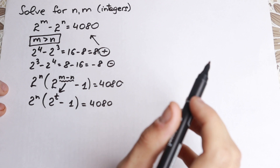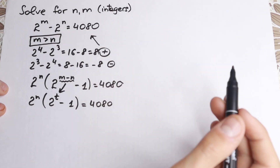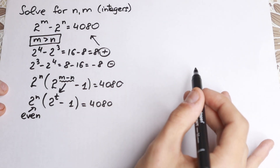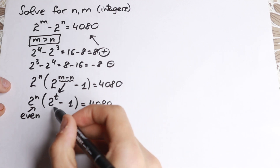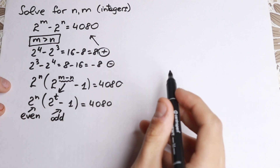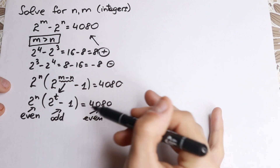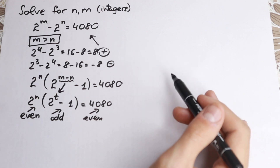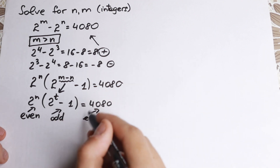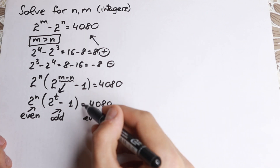Now a really interesting moment: 2 to the n is always an even number — 2 to the 10, 2 to the 11, 12, 13 — all even. Likewise, 2 to the power t is even. But when we subtract 1 from an even number, we get an odd number. For example, 56 minus 1 is 55, which is always odd. And 4080 is an even number. So we have even times odd equals even — that's consistent. Now let's work with factoring 4080.